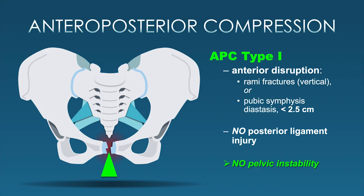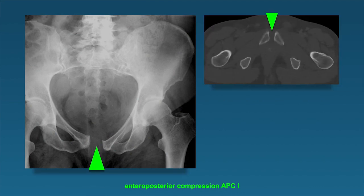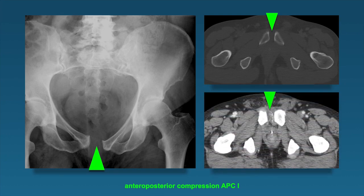Here is what APC type 1 looks like on the radiograph—some opening and widening of the pubic symphysis. Here it is on CT. Remember, when imaging these patients they may already be placed in a pelvic binder or have a sheet tied around them, so some injuries can be reduced at the time of imaging. Take a look and see if you can identify if the patient is in a binder. Notice that this patient is in fact bleeding anteriorly in between the symphysis on the soft tissue window.